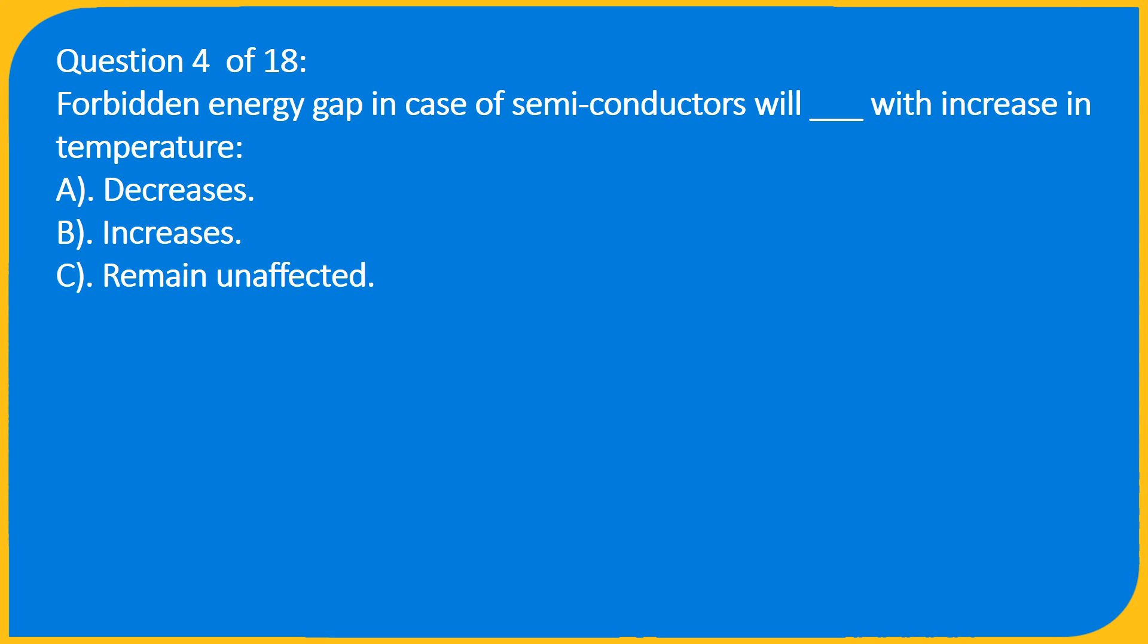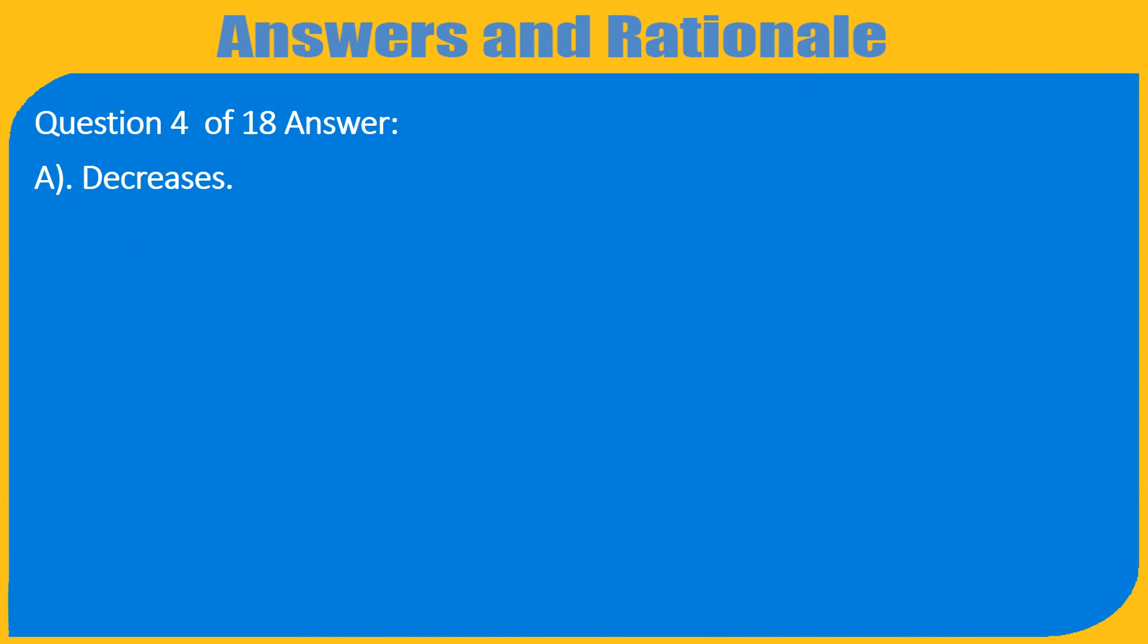Question 4 of 18: Forbidden energy gap in case of semiconductors will underscore with increase in temperature: A. Decreases, B. Increases, C. Remain unaffected. Question 4 of 18 Answer: A. Decreases.